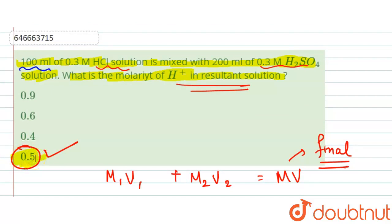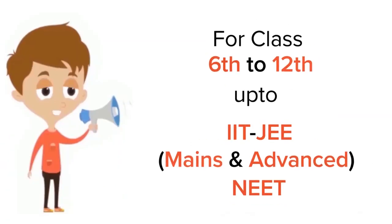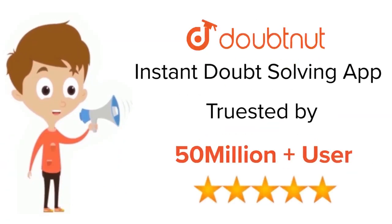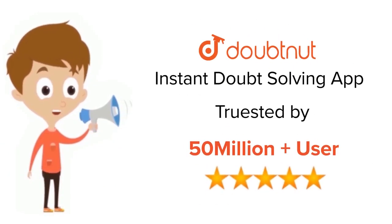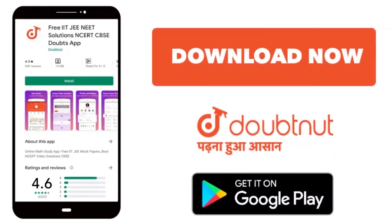So the answer is option number 4, that is 0.5 M. For class 6 to 12, IIT JEE, and NEET level, trusted by more than 5 crore students — download the DoubtNet app.